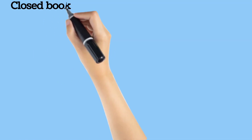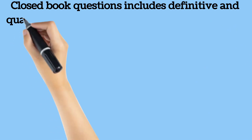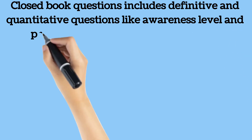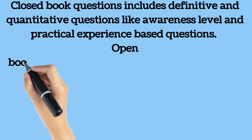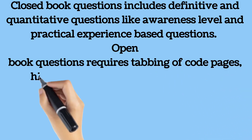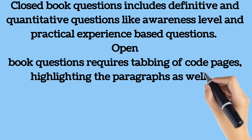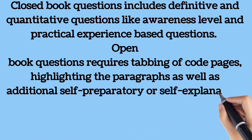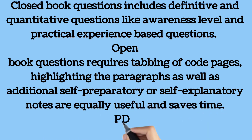The exam consists of open-book and closed-book questions. For closed-book questions, the inspector is expected to answer without referring to codes, covering awareness-level and practical experience-based questions. For open-book questions, one should be able to find specific code sections through tabbing and highlighted paragraphs; self-explanatory notes are useful and save time. You should also be well trained in navigating the PDF version, as word search will not be available during the exam.